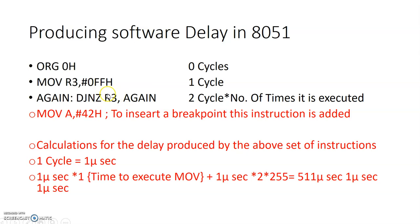DJNZ decreases R3, then checks whether it is equal to zero or not. If it is not zero, it goes to the label again and comes back to DJNZ. This is evaluated again and again until R3 becomes equal to zero. According to the number fed into R3, a delay will be generated. Let's take FF — the maximum value that can be stored in an 8-bit register — and see how much delay it produces.